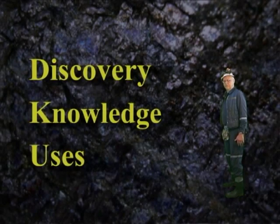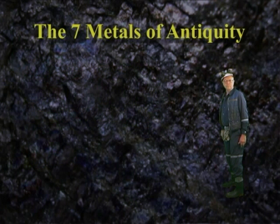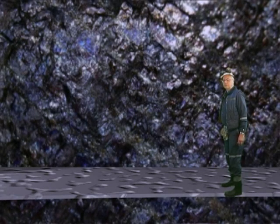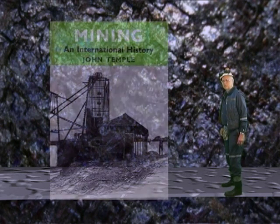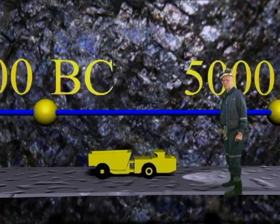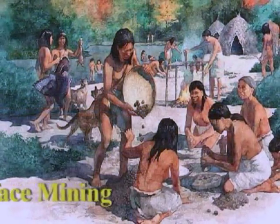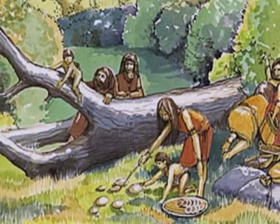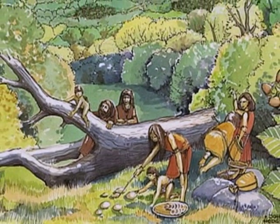Our civilization can be defined by a document referred to as the seven metals of antiquity. These seven metals include gold, discovered around 6000 BC, and copper. Author and historian John Temple can trace forms of mining back to 6000 BC, some 8000 years ago. These early mining techniques could be described as surface mining, as our early ancestors collected gold and copper from the earth's surface and shallow riverbeds.